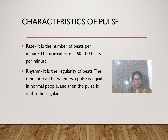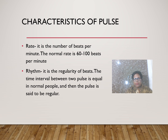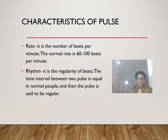The characteristics of pulse are: rate — the number of beats per minute, normally 60–100; rhythm — the regularity of beats, where the time interval between two pulses is normally equal; if irregular it is called arrhythmia.